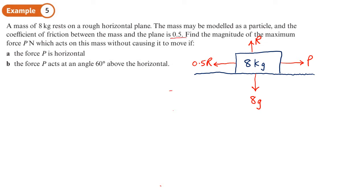The coefficient of friction is 0.5. We'll also add the force for part b, shown in green at an angle of 60 degrees. The components of that force are p cos 60 in the horizontal direction and p sin 60 in the vertical direction.